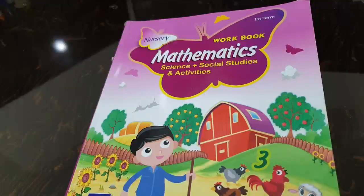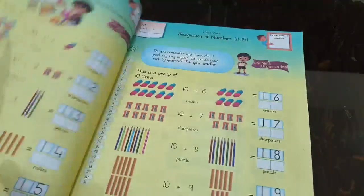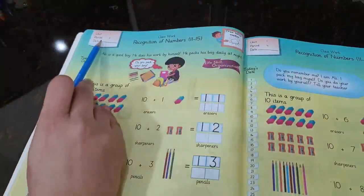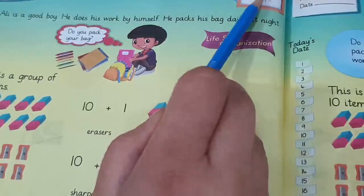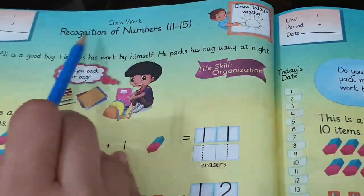Bismillah ar-Rahman ar-Rahim. As-salamu alaykum dear students. Let's open your workbook maths of class nursery page number 3 with me. First of all, put the date over here. Then draw today's weather. How's the weather today? It's sunny today. Draw a bright yellow sun over here. Okay, beta.